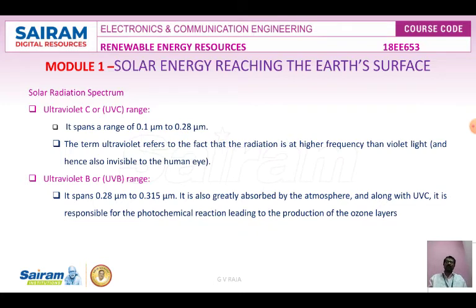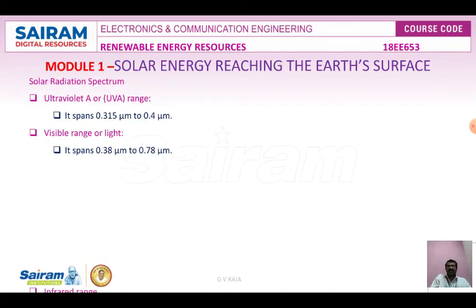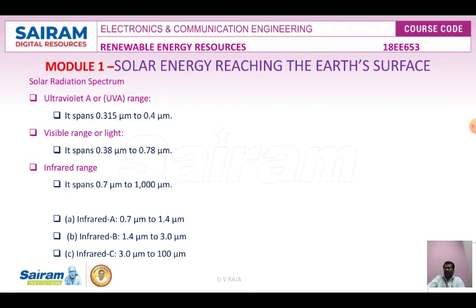UVA range spans from 0.315 micrometer to 0.4 micrometer. It is less damaging to DNA and is used in tanning and PUVA — photochemical UVA therapy for psoriasis.